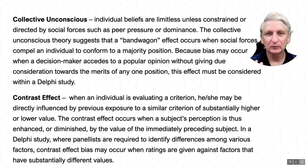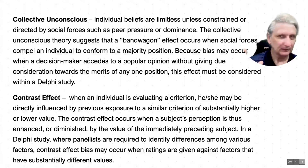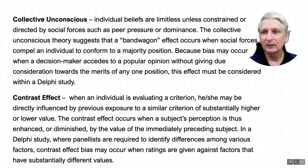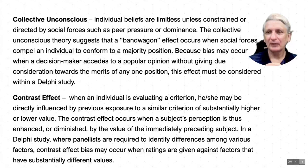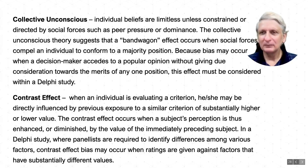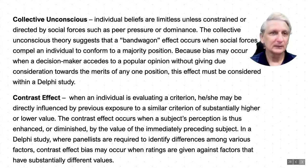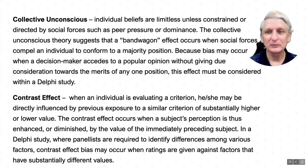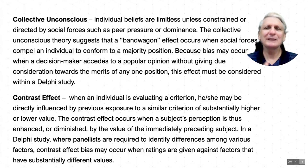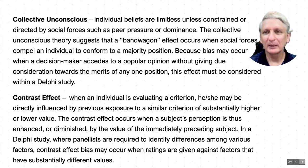Another bias is when a preceding question or issue has an undue influence on the question we're currently looking at. For example, if a question asks whether everyone will lose their job as a result of new technologies and then the next question is what new technologies might have the least impact upon the workplace, you may be considering things in a very different light. Whereas if the preceding question had been about the benefits of new technologies, it may give you a completely different perspective on how to address the question.